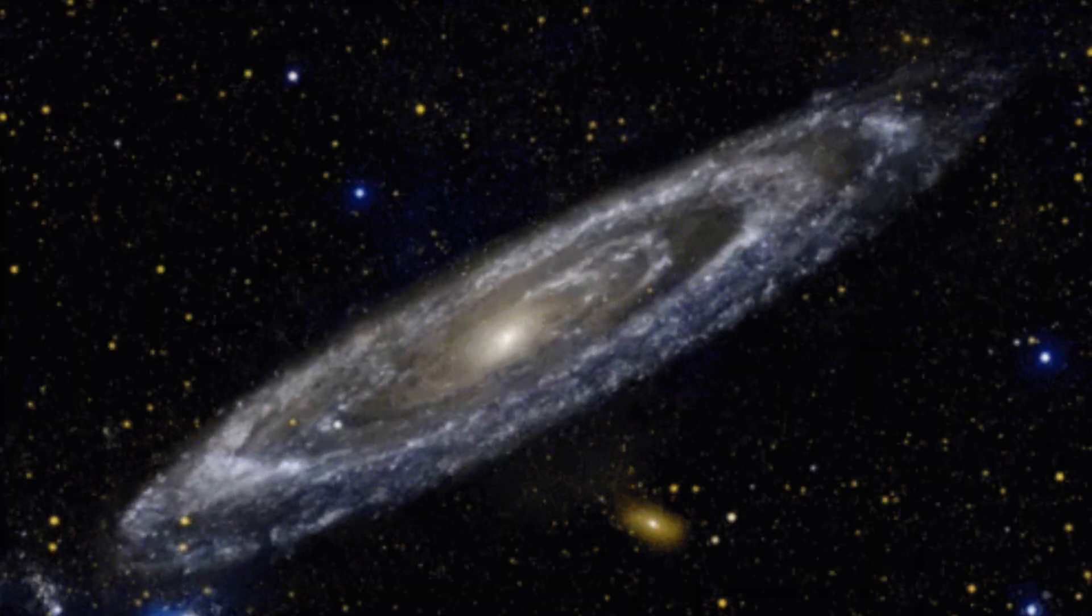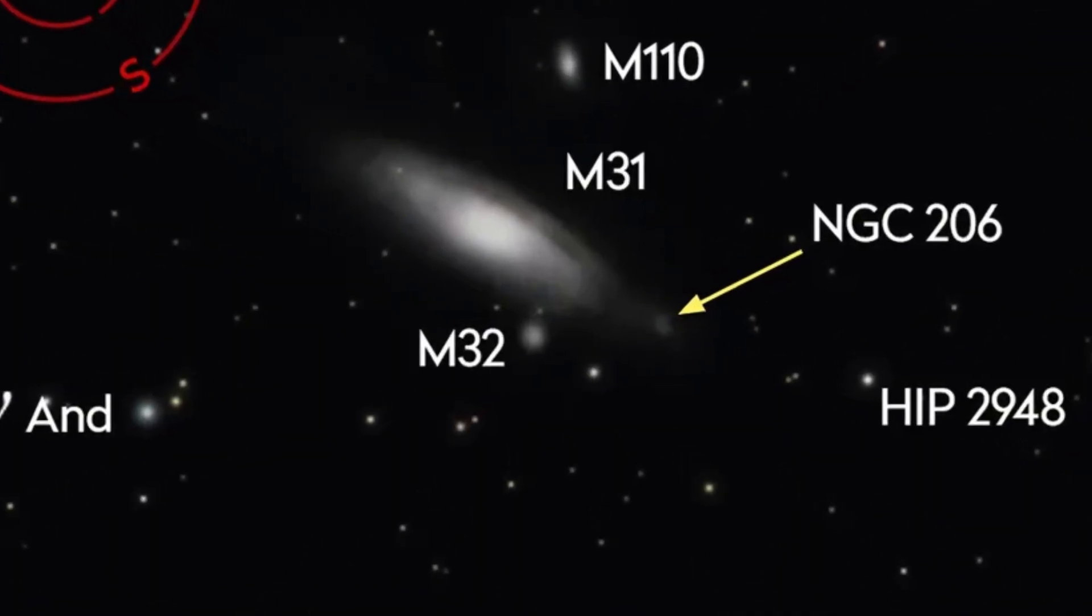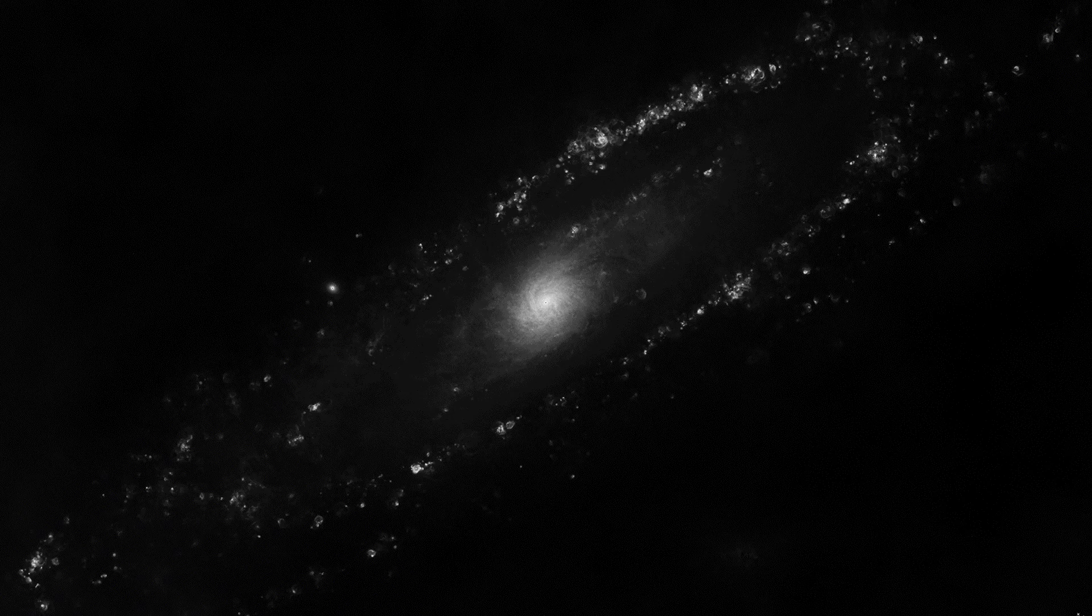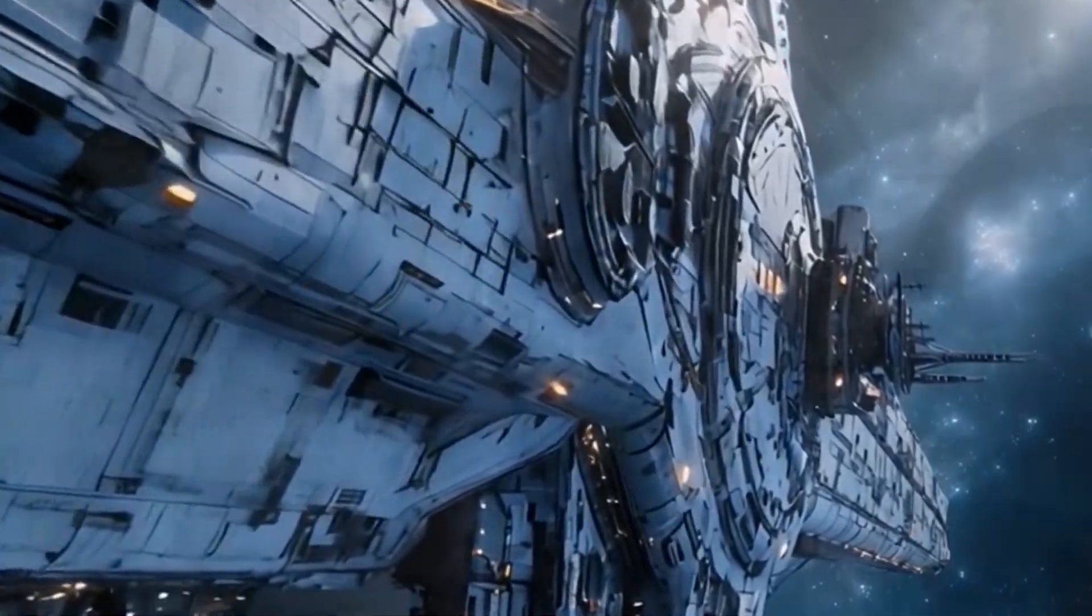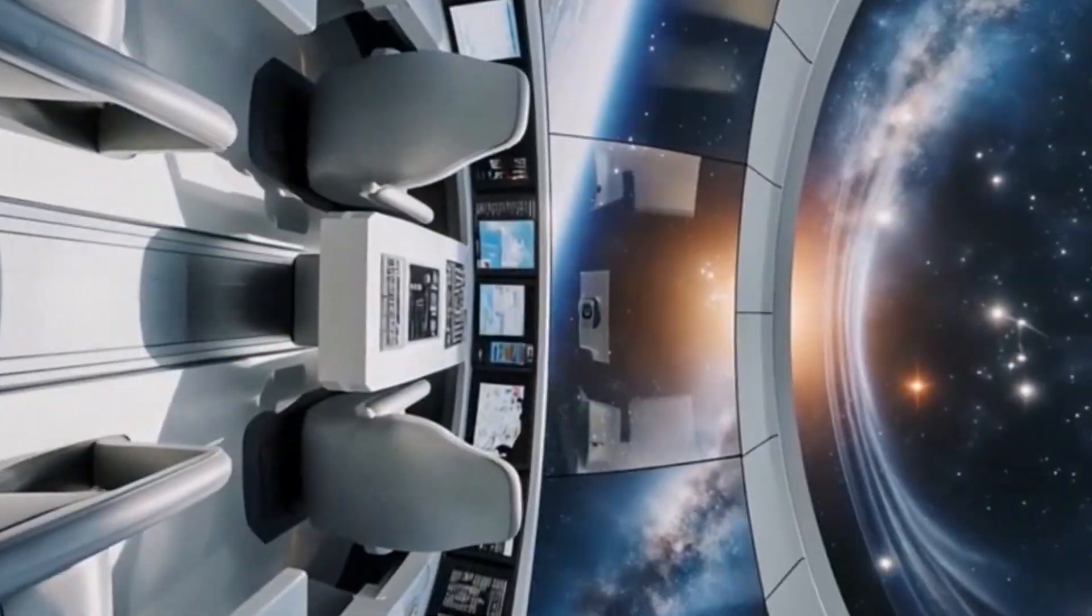It has at least two satellite galaxies, M32 and M110, that are clearly visible even with small telescopes, companions orbiting like moons. If you could fly at light speed, it would still take you 2.5 million years to reach it.